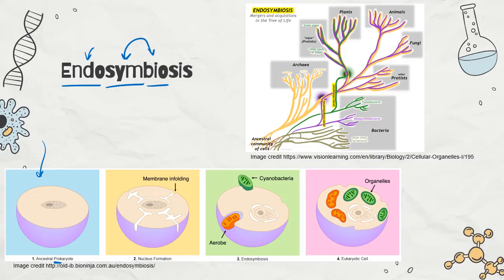Scientists call this ancestral cell Asgard — how fabulous is that? What happened to this Asgardian cell is that its plasma membrane started to fold in, making these big wrinkles, and those wrinkles started to merge around the DNA that was just floating around in the nucleoid region of the cell. This eventually led to the formation of the nucleus.